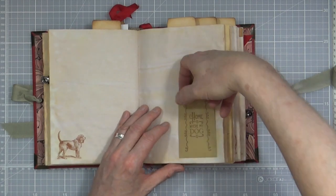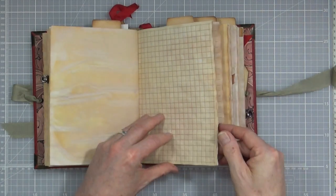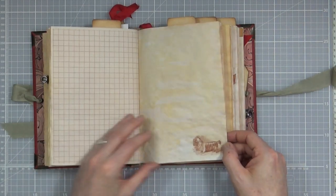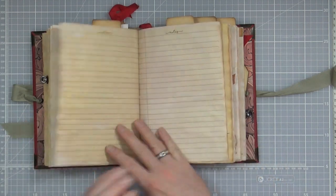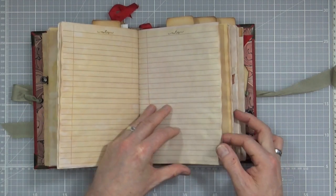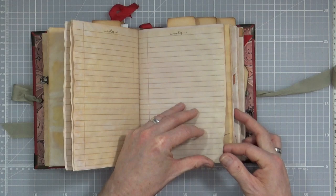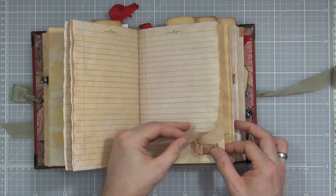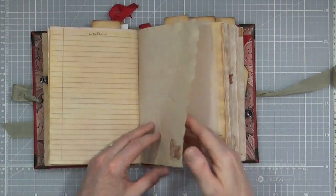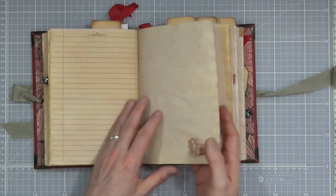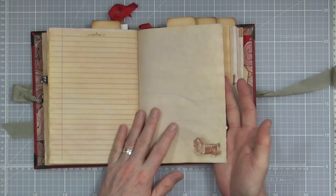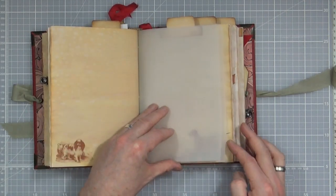Another little pocket there, nothing in that one so still space for you to add extra bits and pieces. I think every single one, every other one has got something in. I love the variation in the colors of the papers, even on the back of one it's darker or lighter than the other.